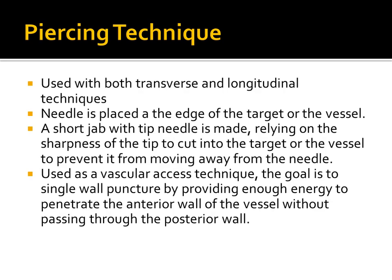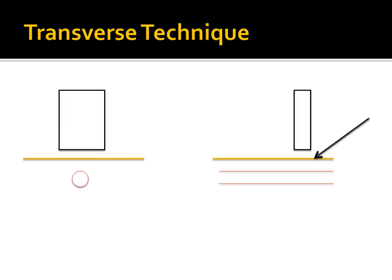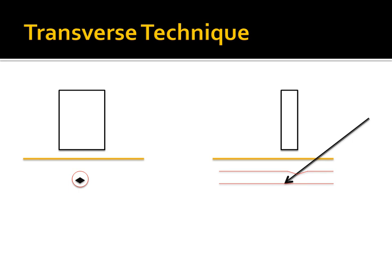The piercing technique can be used with both transverse and longitudinal approaches. The needle is placed on the edge of the target or vessel, and you make little short jabs of the needle — relying on the sharpness of the needle to keep the object from moving away. You make a sharp jab on the structure, and it can be used as a vascular access technique with the goal of entering only one side of the vessel rather than piercing the opposite side as well. The quick jabbing motion uses the cutting action of the needle tip to pierce a single wall of the structure.